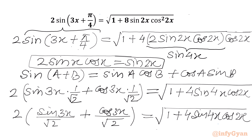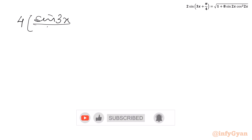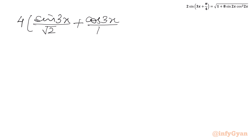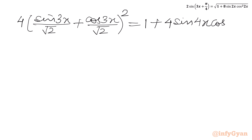Now I will consider squaring both sides — adding power 2 to each side — so the square root and square cancel on the RHS. Writing it out: 4 times (sin 3x/√2 + cos 3x/√2)² equals 1 plus 4 times sin 4x cos 2x.